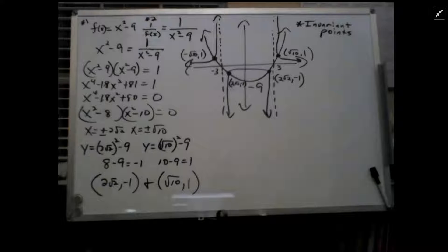The invariant points here for a function and its inverse function, like if f of x is x, the inverse is like 1 over x.